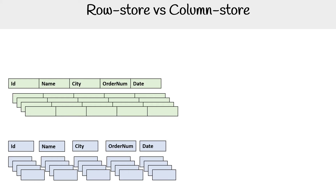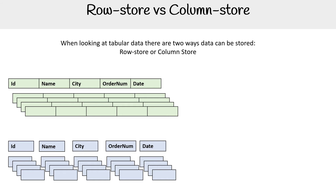We know that relational databases store tabular data, but data can also be stored either in a row-oriented way or a column-oriented way. Let's talk about the differences there and why we would do that.